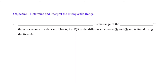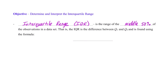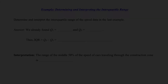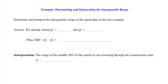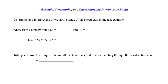Our next objective is the interquartile range, which we call IQR — the range of the middle 50% of the observations in the data set. The IQR is the difference between Q3 and Q1, found using the formula: IQR equals Q3 minus Q1. For our speed data, Q1 is 28 and Q3 is 38, so the IQR is 38 minus 28, which equals 10. Our interpretation: the range of the middle 50% of the speeds of cars in the construction zone is 10 miles an hour.